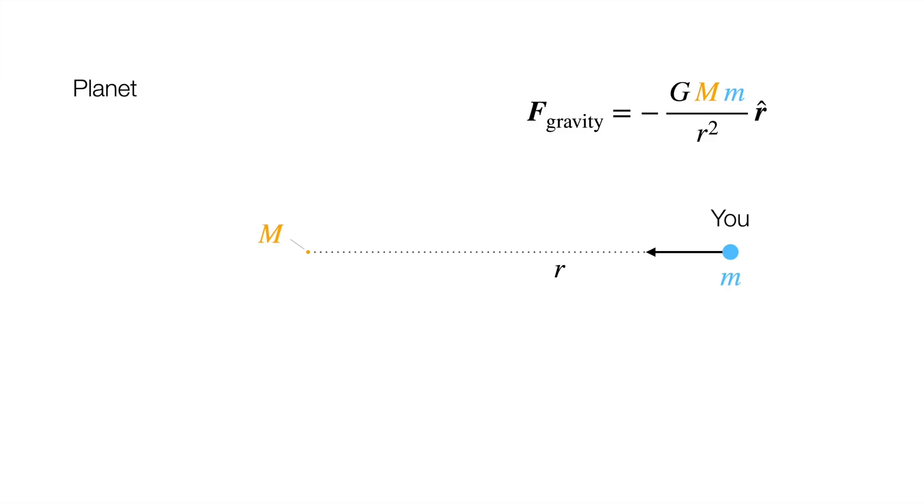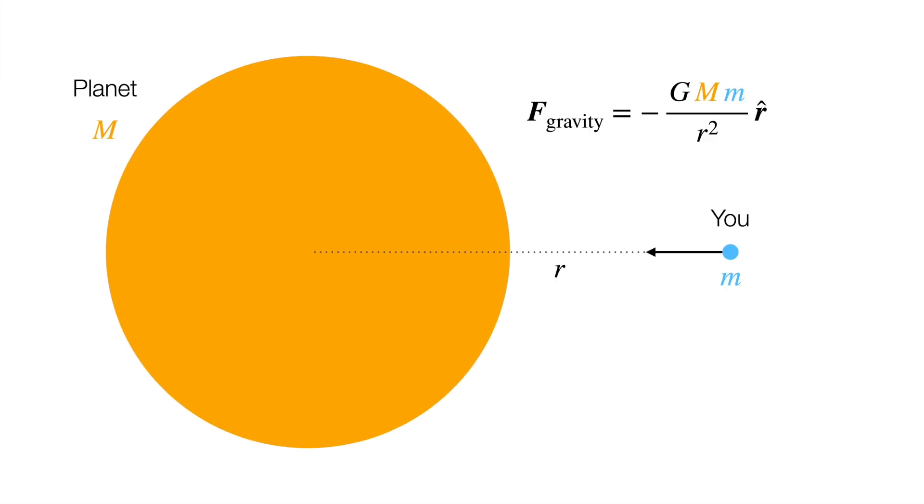Doesn't it feel like there should be a difference? In this case, all parts of the planet are actually at the center, same distance away from you. But when we do this, now they're all spread out. Some parts are closer, some are farther, and aren't they pulling in different directions? Well, they might be, but it turns out there's actually no difference at all as far as gravity's concerned.